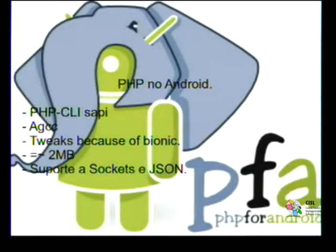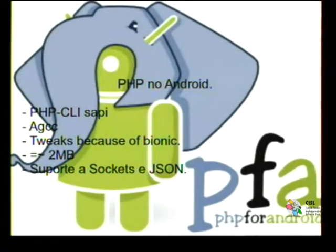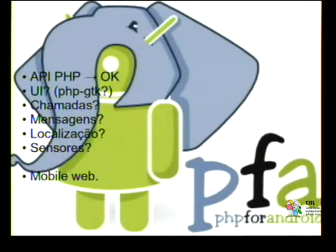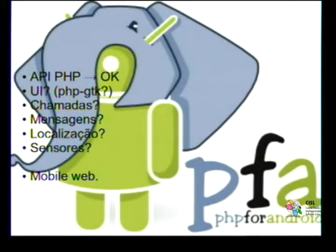PHP for Android has a command-line interface, AGCC support, tweaks for Bionic, a size of approximately 2MB, and support for sockets and JSON. If you don't want to use XML, use JSON. It has the full PHP API and runs normally. The PHP GTK graphical interface is still in development — nothing presentable yet. The call feature is not working, messaging is partial, location is working very well, and sensors are excellent.